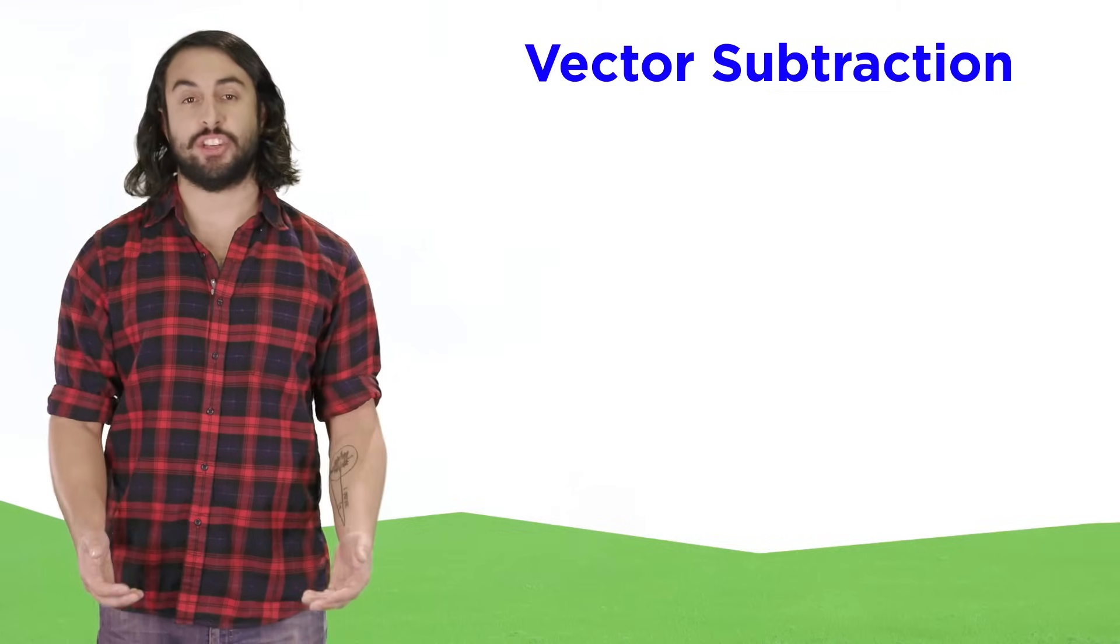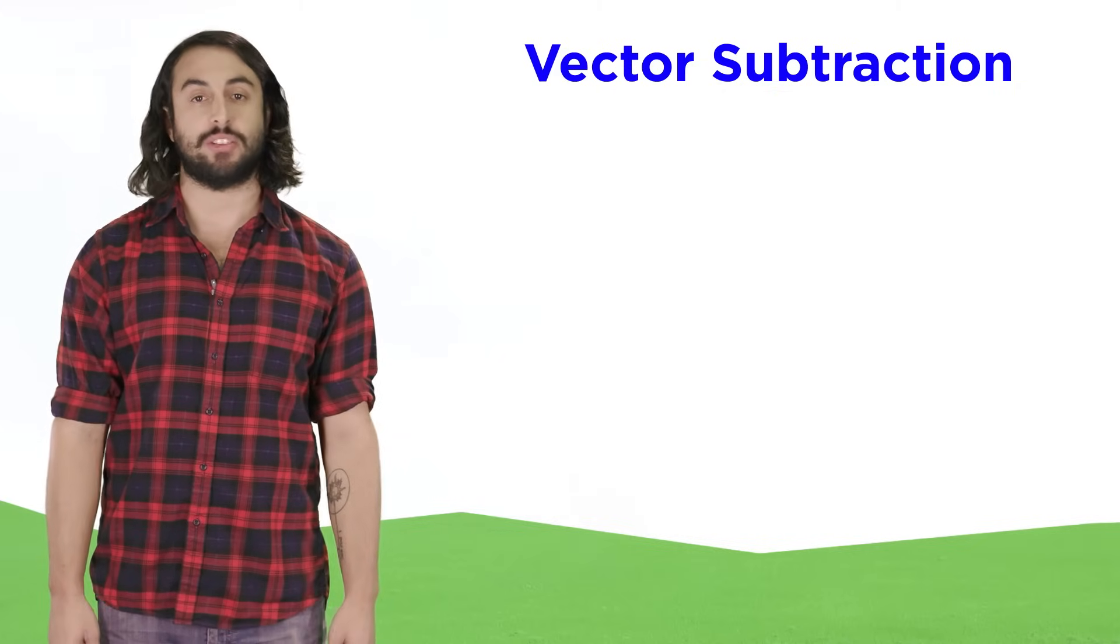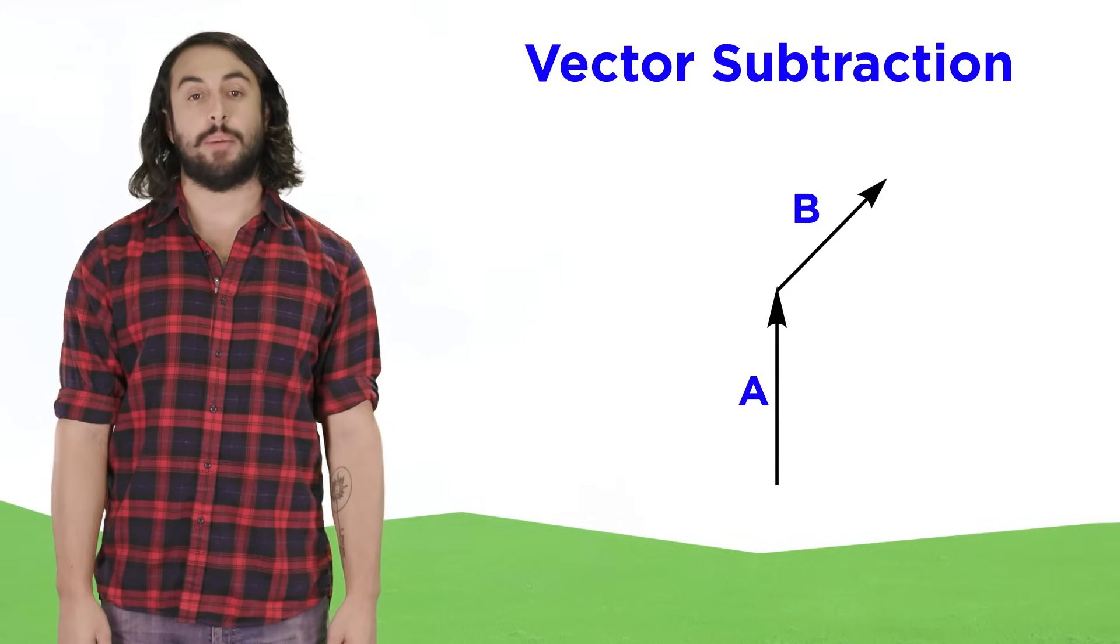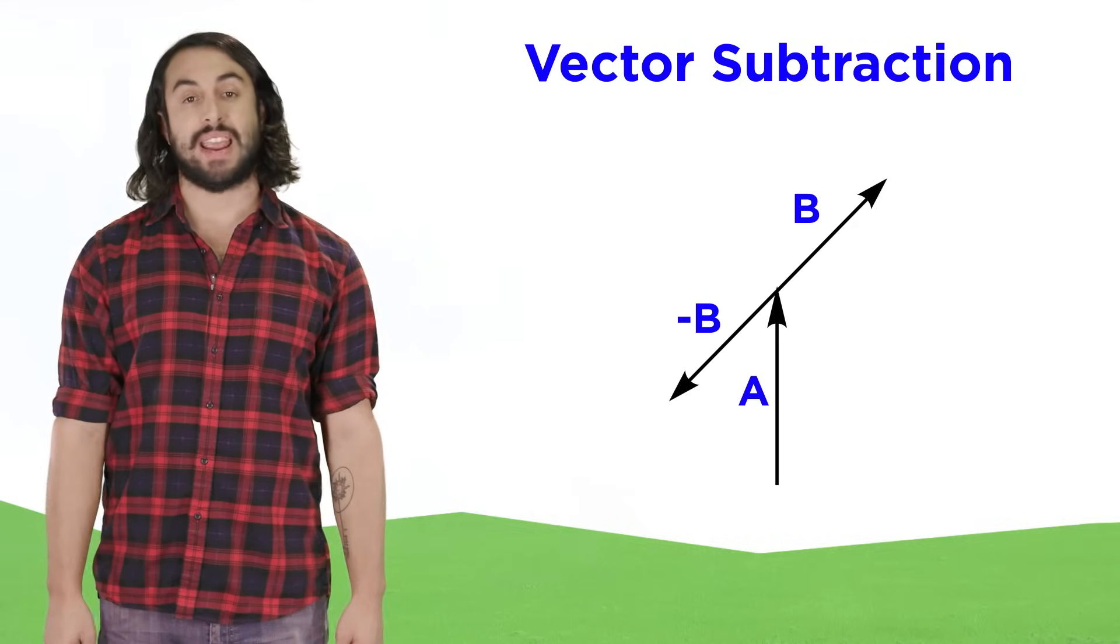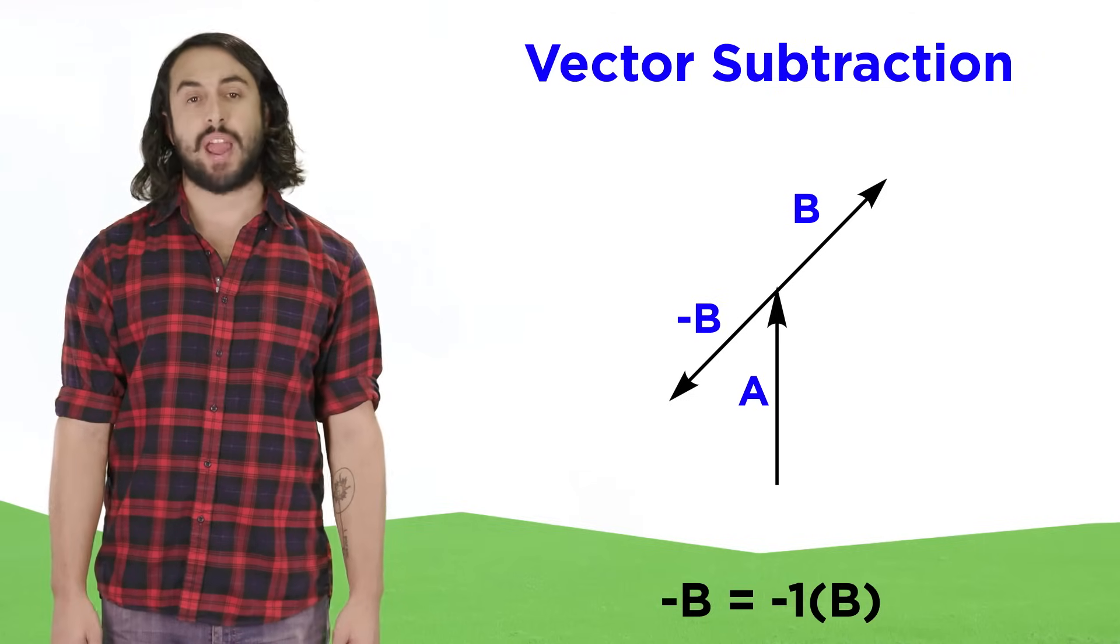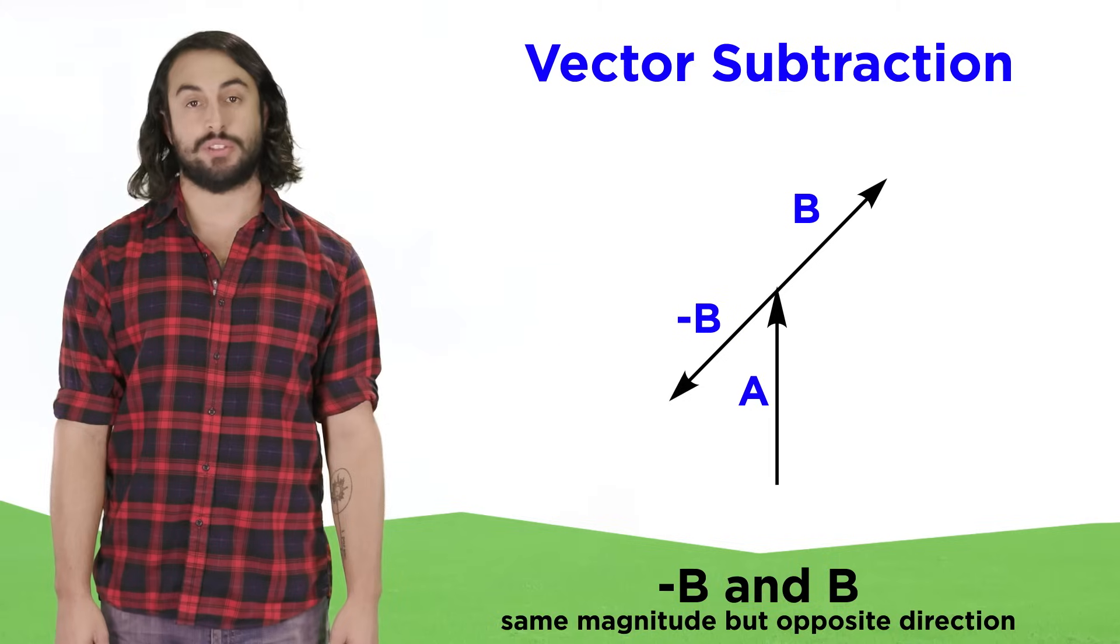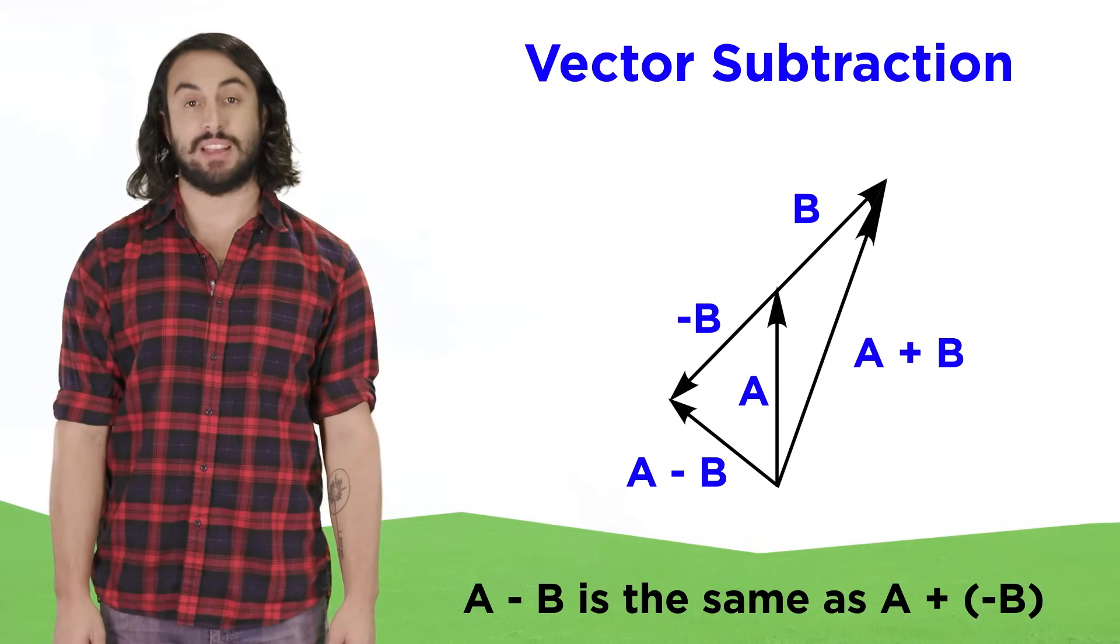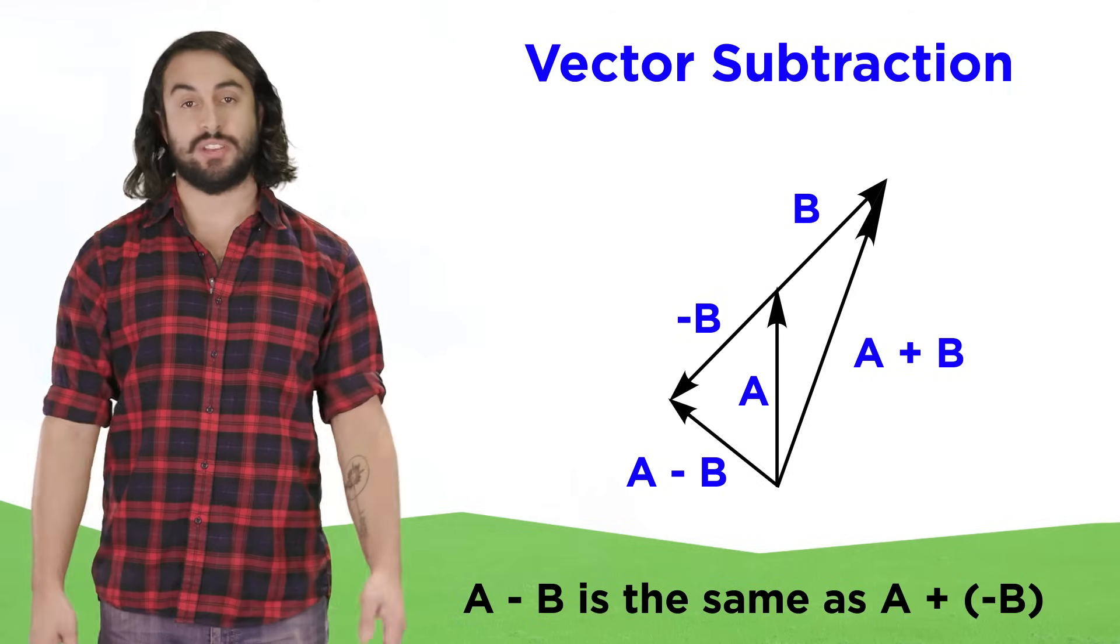Now that we understand vector addition, let's quickly go through a few other operations. Vector subtraction will be similar to vector addition, except that when subtracting vectors, we will again line them up head to tail, but we will invert the direction of the second vector. This is the same as multiplying the vector by a scalar of negative one. This way, the magnitude of the vector remains the same, but its direction is reversed. So instead of a plus b, which looks like this, a minus b would look like this, which is essentially a plus negative b. We find the resultant vector, and that's all there is to it.